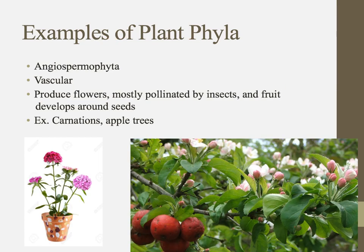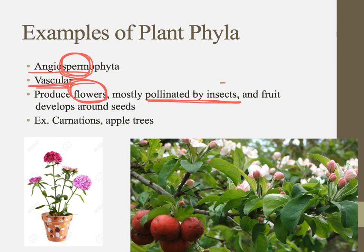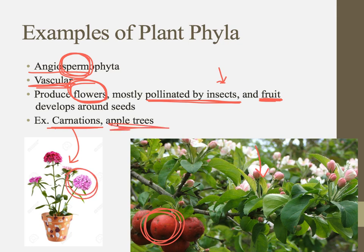Our last plant phylum is the one with the biggest name: angiospermophyta. Angiosperms. I remember this one because it sounds like "sperms," so it has something to do with sexual reproduction. They are vascular and these are our flower-producing plants. They are mostly pollinated by insects, though a few are wind-pollinated. They produce fruit — fruit is what develops around the seed after a flower has been pollinated. This includes herbaceous plants as well as most broadleaf trees that produce flowers.